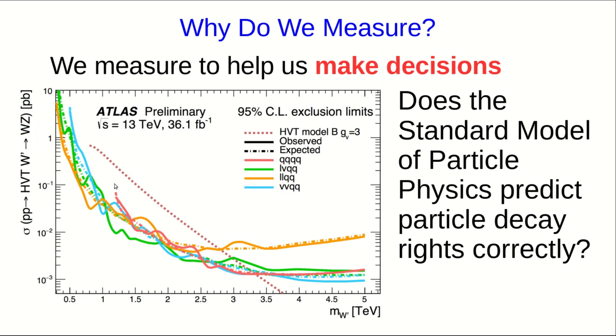For scientists, overall, the reason to make measurements is to test hypotheses. We will use a theory to make some prediction about what a quantity ought to be according to the theory, and then we will make measurements in an experiment to see whether the measurements agree with the theory.